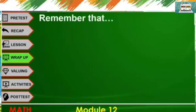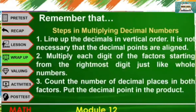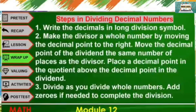Let's have a wrap-up. Always remember these steps in multiplying decimal numbers. First, line up the decimals in vertical order — it is not necessary that the decimal points are aligned. Second, multiply each digit of the factors starting from the rightmost digit, just like whole numbers. Third, count the number of decimal places in both factors, then put the decimal point in the product. For dividing decimal numbers: write the decimals in long division symbol; make the divisor a whole number by moving the decimal point to the right; move the decimal point of the dividend the same number of places; place the decimal point in the quotient above the decimal point in the dividend; divide as you divide whole numbers; add zeros if needed to complete the division.